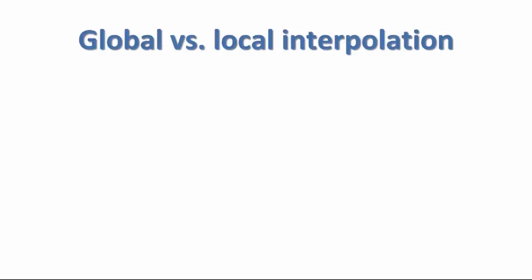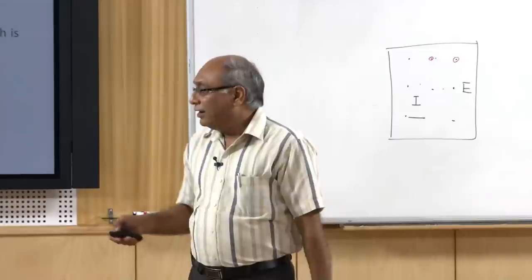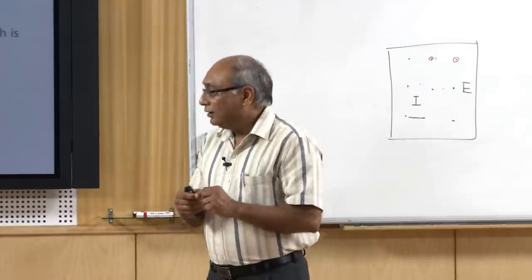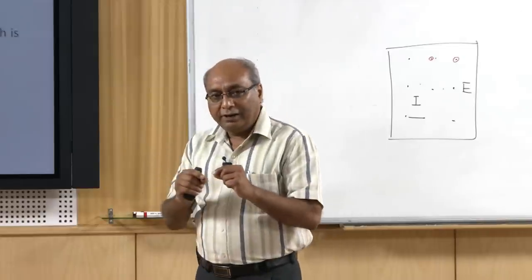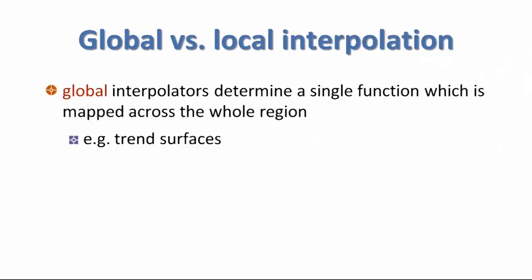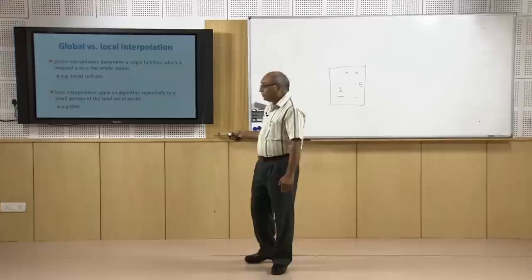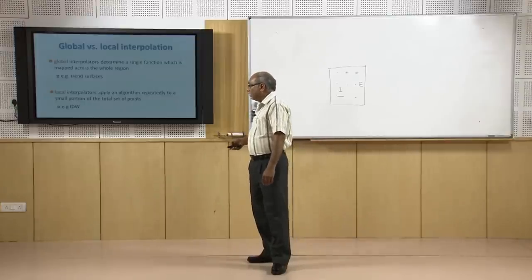Local interpolators apply an algorithm repeatedly to a small portion of the total set of points. An example is the inverse distance weighted (IDW) method, which has been implemented into standard GIS softwares.